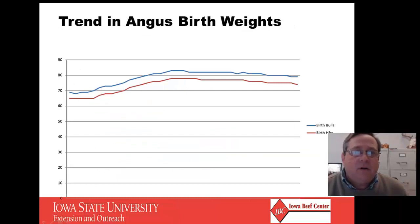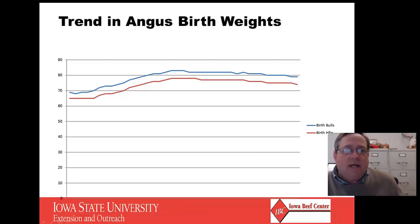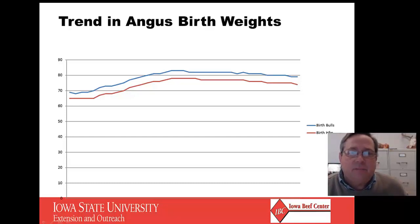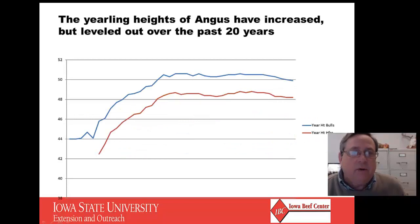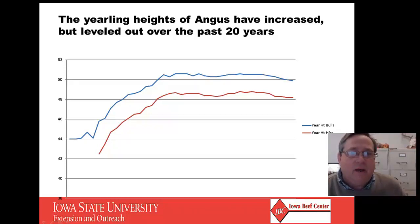If you look at the trend in Angus birth weights, they certainly got larger historically, but over the last 20 to 25 years they really haven't increased that much and have actually maybe decreased a little. We've basically maintained birth weights pretty well and even made a slight decrease while having increases in Angus growth traits — yearling weight and weaning weights have gotten bigger. Frame size increased dramatically for many years, but the last 15 to 20 years it has leveled out, so we haven't had as much increase in just frame size.